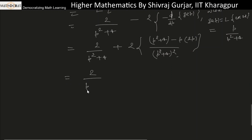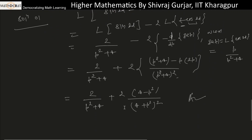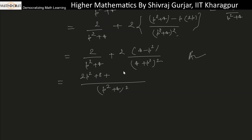After differentiation, we get: 2/(p²+4) plus 2 times [(4 minus p²)/(p²+4)²]. Taking the LCM as (p²+4)², this becomes [2(p²+4) + 2(4 − p²)] divided by (p²+4)², which simplifies to [2p² + 8 + 8 − 2p²] over (p²+4)², giving 16/(p²+4)². This is the answer.